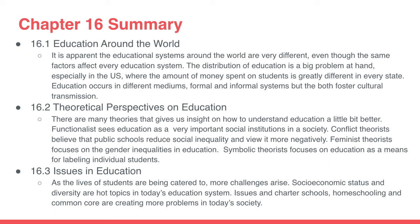Section 16.2 was about theoretical perspectives on education. There are many theories that give us insight on how to understand education a little bit better. Functionalists see education as a very important social institution in a society. Conflict theorists believe that public schools reinforce social inequalities and view it more negatively. Feminist theorists focus on gender inequalities in education. Symbolic interactionists focus on education as a means for labeling individual students.